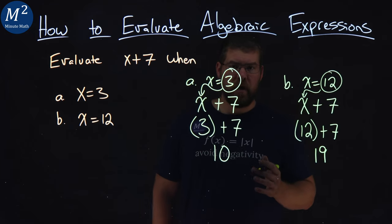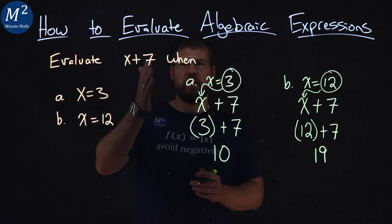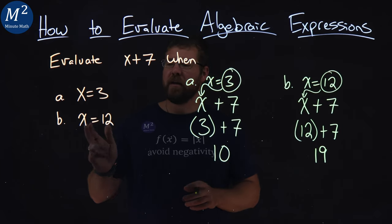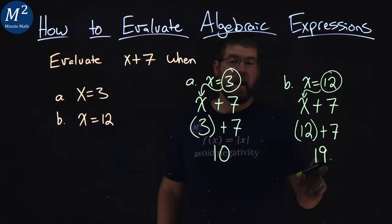And there we have it. We've evaluated x plus 7 when x equals 3 and got 10, and when x equals 12, we got 19.